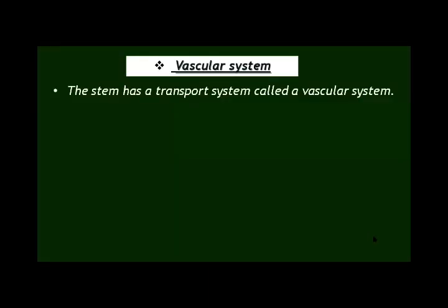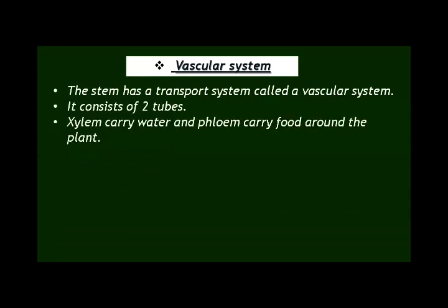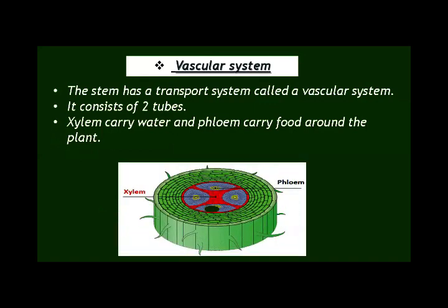In the stem there is a transport system called the vascular system. The stem has a vascular system consisting of two tubes: xylem carries water and phloem carries food around the plant. This is the answer to the question: what do you know about the vascular system? Please take a screenshot.